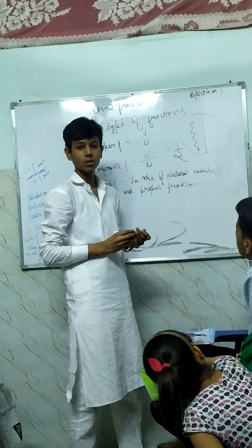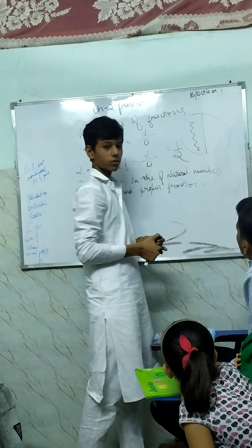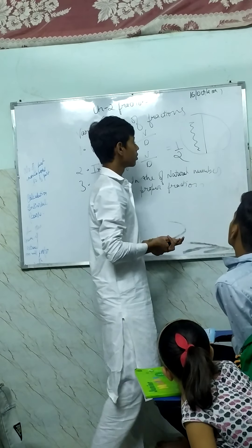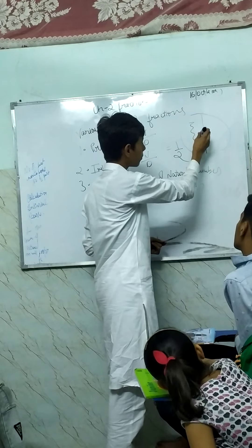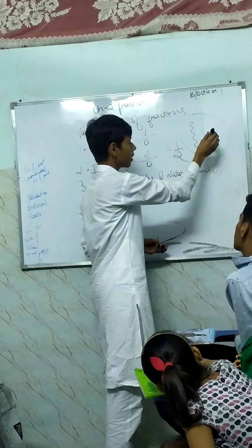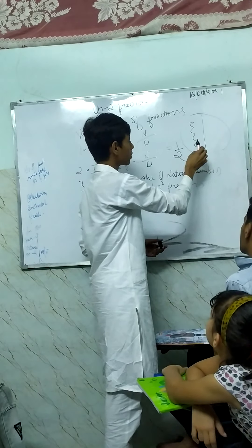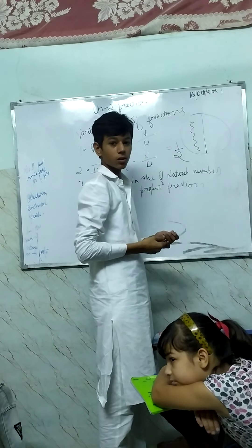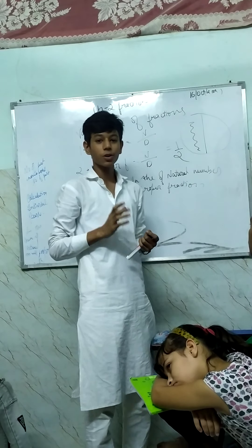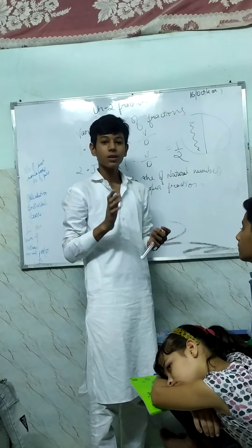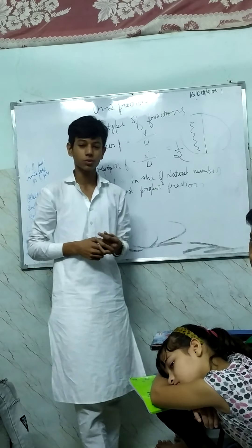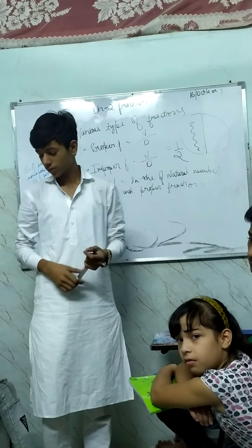What is two and what is one? One is the numerator and two is the denominator. Why? Because half part is baked and half is unbaked. Two means the total number of parts, and one is the baked part. Okay, thank you so much. Very nice, thank you! Next student.